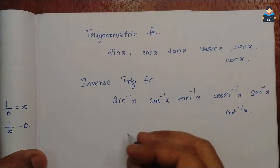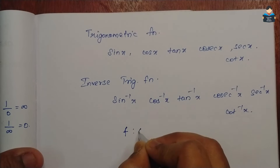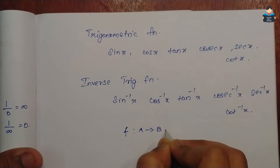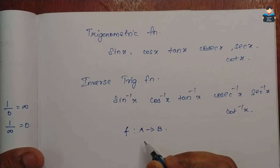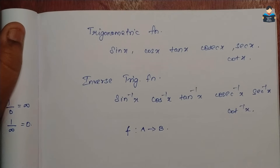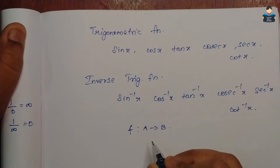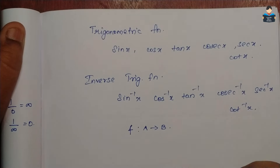For a function from A to B, an inverse function exists only when the function is bijective — it should be both one-to-one and onto. Only then does the inverse function exist.